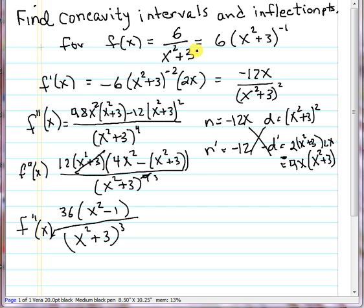I've shown the work here, we'll briefly describe that. I rewrote the original function in this format to make it easy to find the first derivative using the chain rule. So we get negative 1 times 6, subtract 1 from the exponent, and then take derivative of the parentheses using the chain rule, and we simplify that.